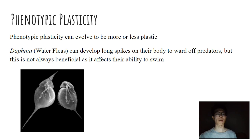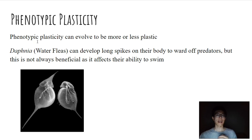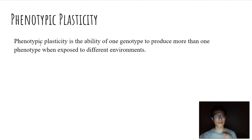What's really fascinating is that plasticity can evolve to be more or less plastic. In the case of the Daphnia, they can develop these long spikes in a relatively short period of time to ward off predators. But this is not always beneficial, because once that predator leaves and the Daphnia needs to go back to feeding, surviving, and foraging, having these spines can actually affect their ability to swim. So they need to change back from the spined form to a non-spined form in order to survive. This is again that ability for one genotype to produce more than one phenotype when exposed to different environments — in this case, presence or absence of a predator.